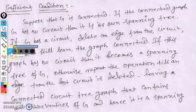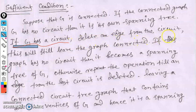If G has a circuit, we can delete an edge from the circuit and the graph remains connected, because a circuit means there is more than one path between two vertices. By removing an edge from the circuit, the graph stays connected. If after deletion the graph has no circuit, it is a spanning tree.